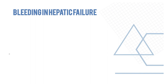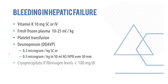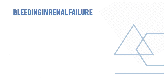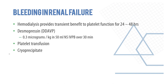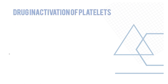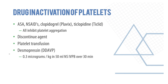Liver failure can cause bleeding since most coagulation factors are synthesized in the liver; vitamin K, fresh frozen plasma, platelets, desmopressin, and cryoprecipitate are all used depending on the presenting complaint. Renal failure can also cause bleeding; hemodialysis provides transient benefit for platelet function for 24–48 hours. Desmopressin, platelet transfusion, and cryoprecipitate can also be used. For drug-induced platelet inactivation (e.g., aminosalicylic acids), discontinue the offending drug; platelet transfusion may be needed and desmopressin can also help in some patients.